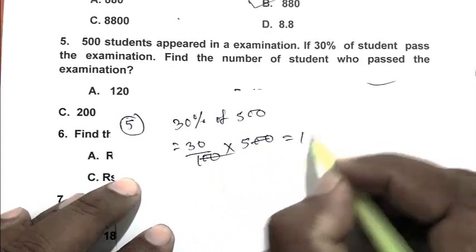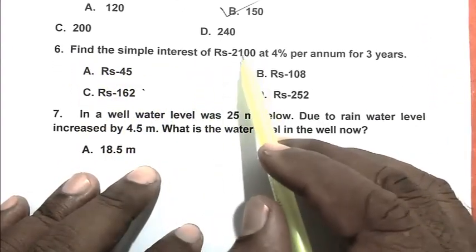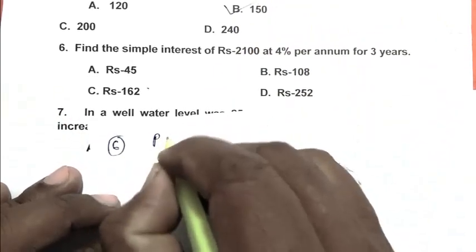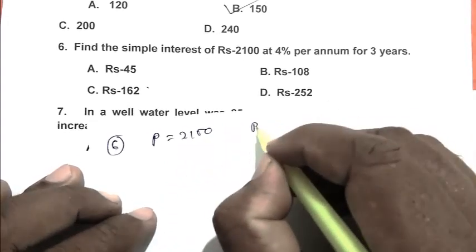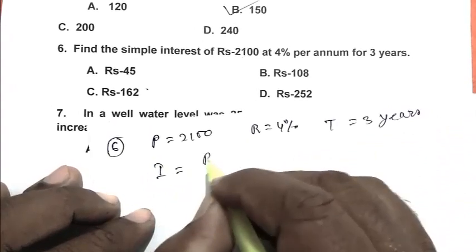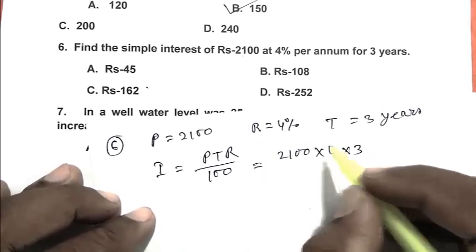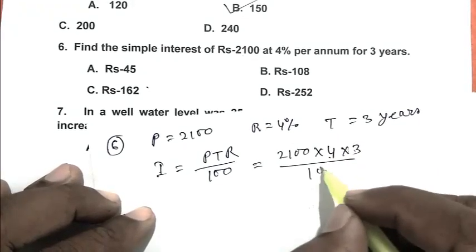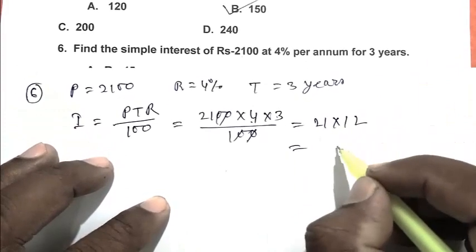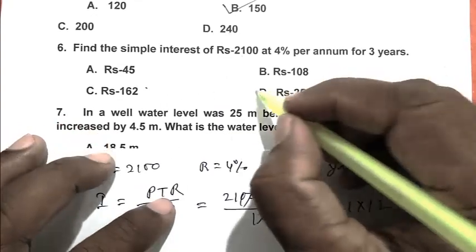Question number 6: Find the simple interest of rupees 2100 at 4% per annum for 3 years. Here principal is 2100, rate is 4%, and time is 3 years. So interest, that is PTR by 100, becomes 2100 times 4 times 3 by 100. So it becomes 21 into 12, that is 252. So D is the right answer.